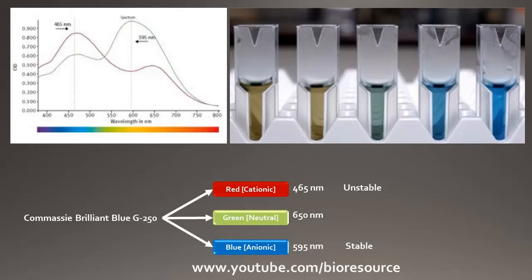The dye exists in three different forms: a cationic form, neutral form, and the anionic form. The cationic form is unstable, and when the dye binds to a protein it shifts its color to blue. The unstable form has reddish or brownish color. Once it binds to a protein it becomes stable and turns color to blue.